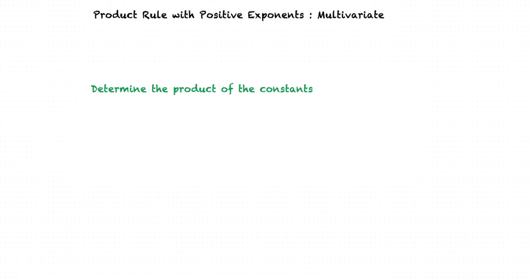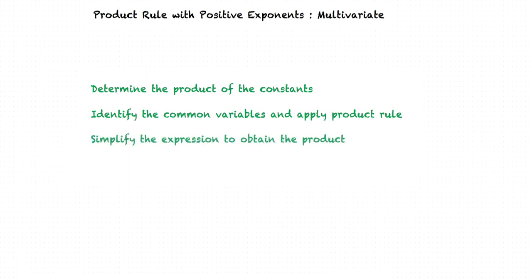In order to determine the product involving multiple variables with positive exponents, we first determine the product of the constants. Next, we identify the same variables and apply the product rule: x to the a times x to the b equals x to the a plus b power. Finally, we simplify the expression to determine the product. Perfect!